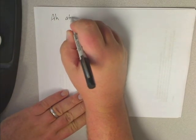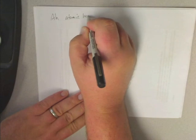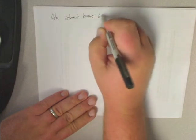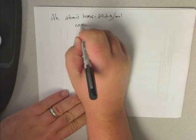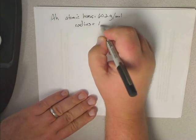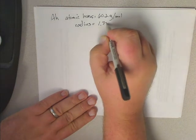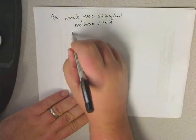Okay, and its atomic mass is 60.2 grams per mole. Its radius equals 1.35 angstroms, and it's simple cubic.